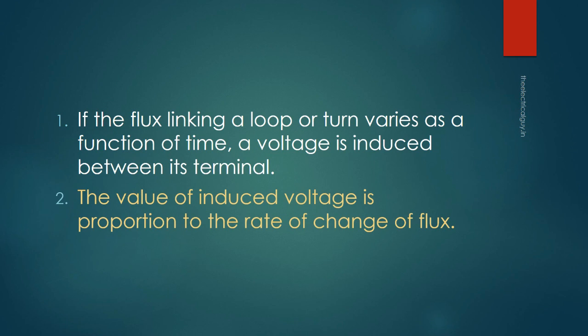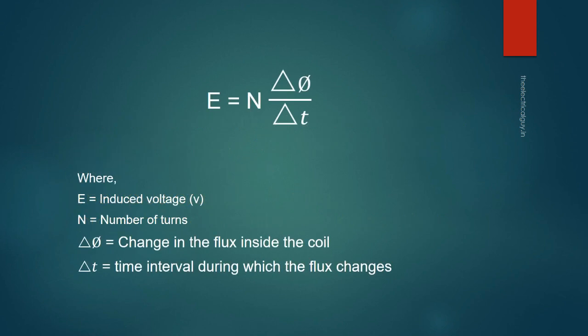The faster the flux will vary, the more voltage will generate, and vice versa. We can put this statement in mathematical form also. If flux varies inside a coil of n-turn, the voltage induced is given by E equals, where E stands for induced voltage. So E equals n multiplied by the change in flux divided by change in time.